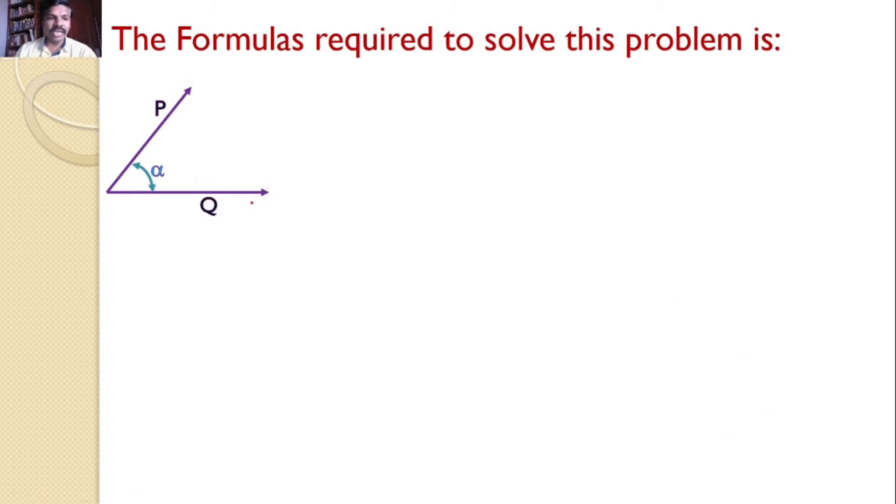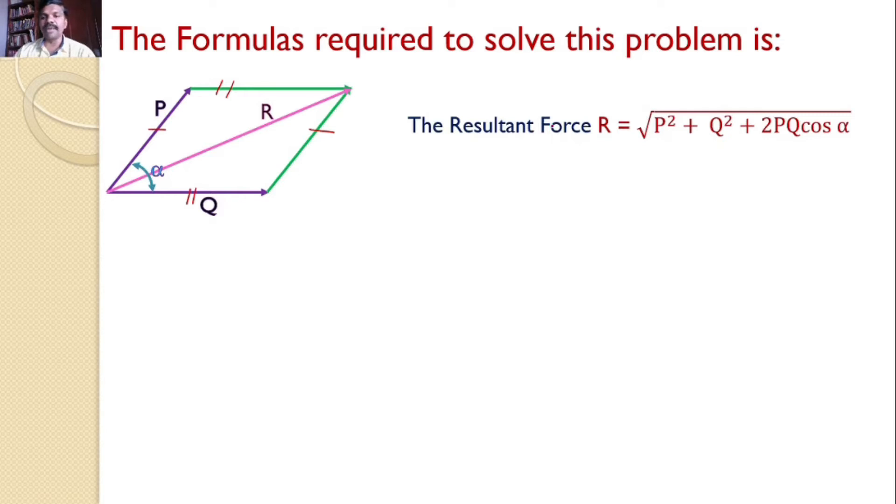By drawing a line parallel to P from Q and by drawing another line parallel to Q from P, it forms a parallelogram. In this parallelogram, the major diagonal R will become the resultant force. And that resultant force is given by the equation R equals square root of P squared plus Q squared plus 2PQ cos alpha.